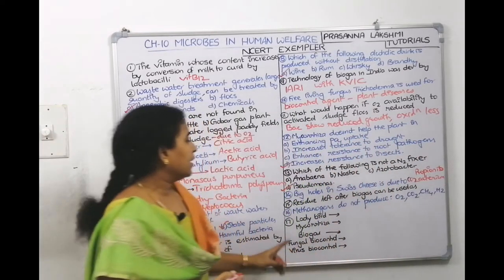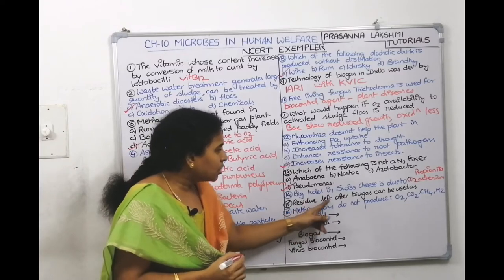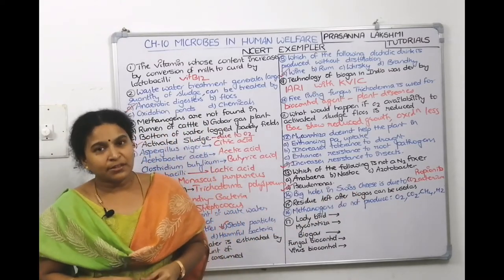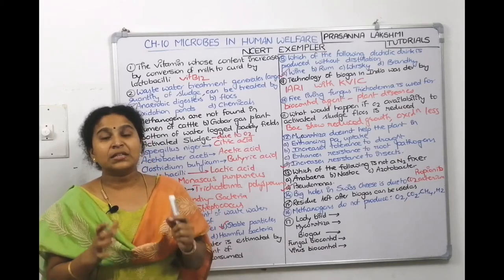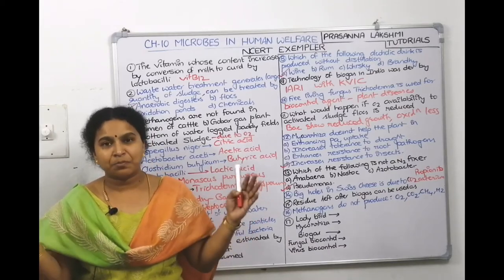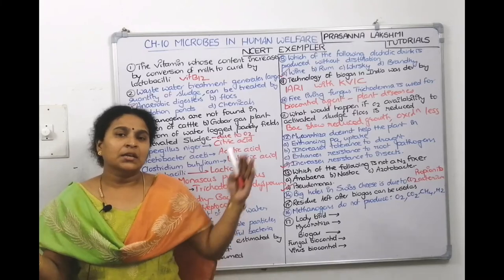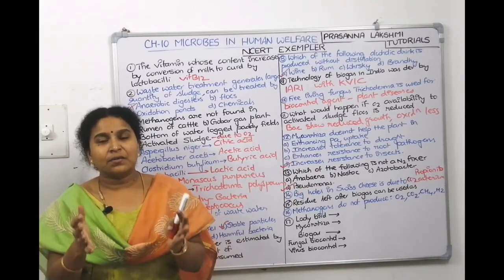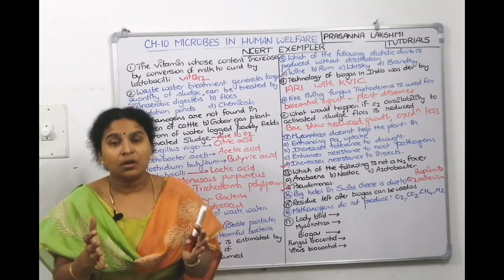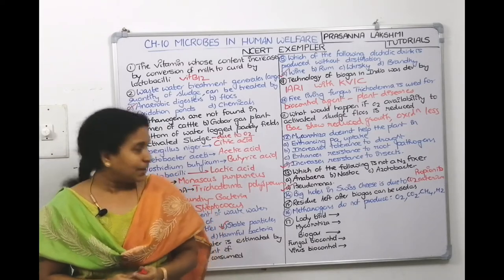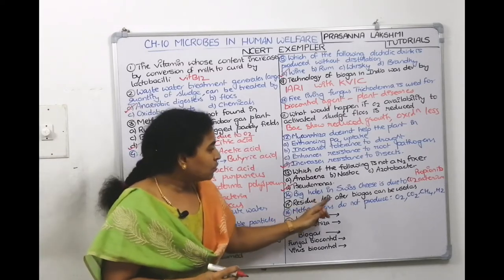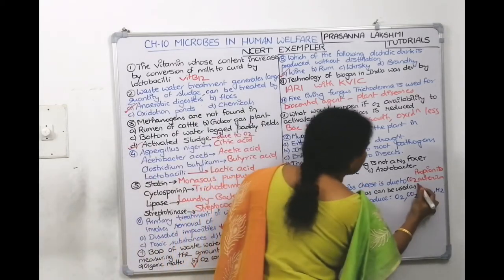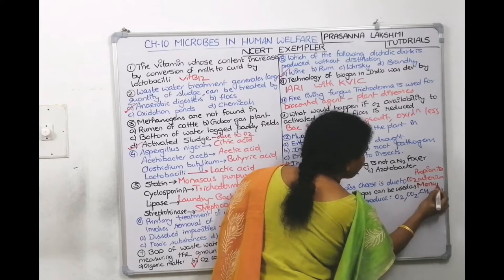Fifteenth question: residue left after biogas production can be used as — In the detailed diagram of the biogas plant, the last component is an overflow tank where waste is collected. This waste is used as manure for plant cultivation. So the answer is manure.